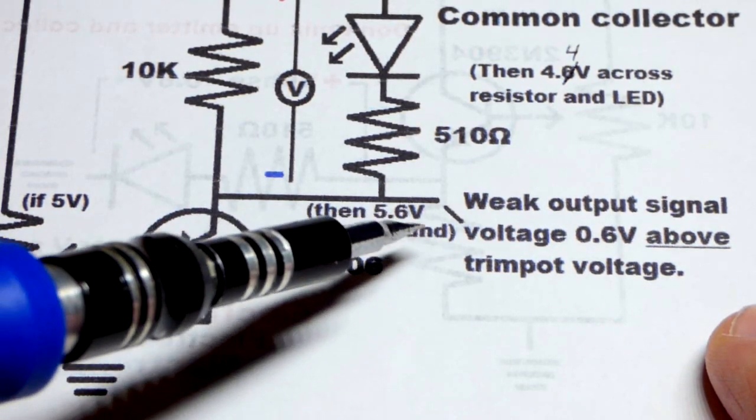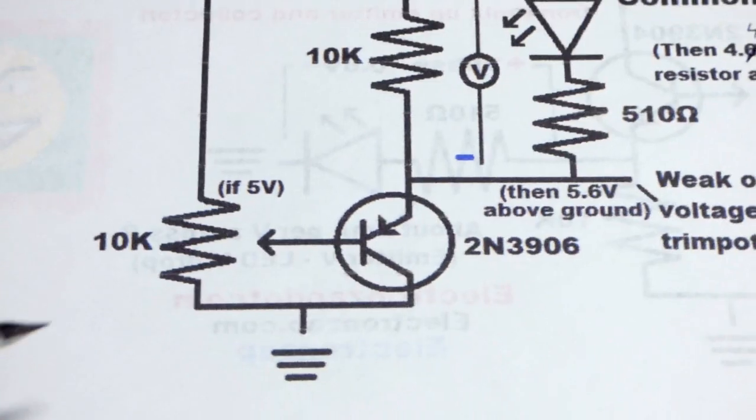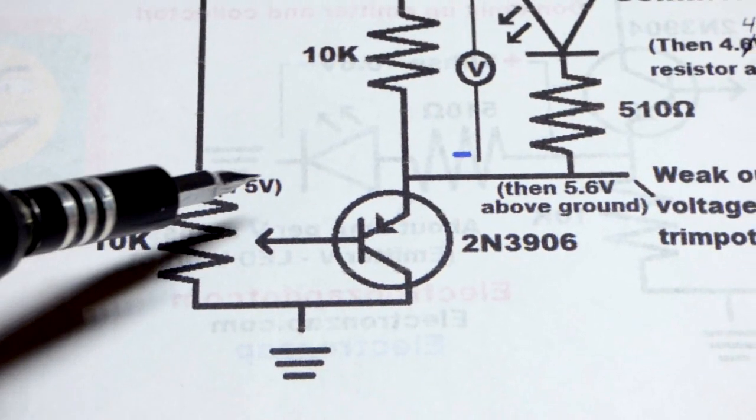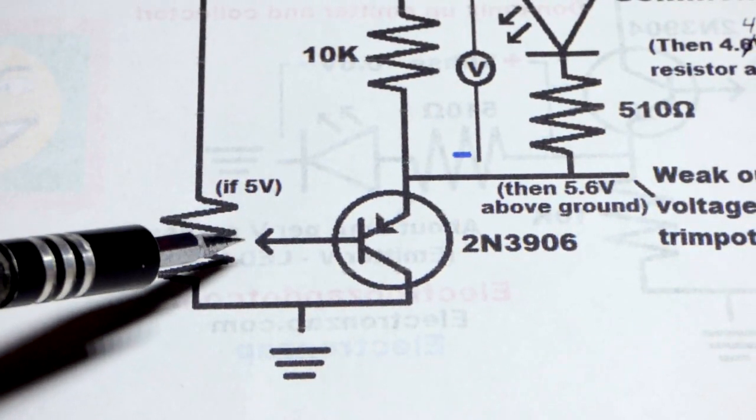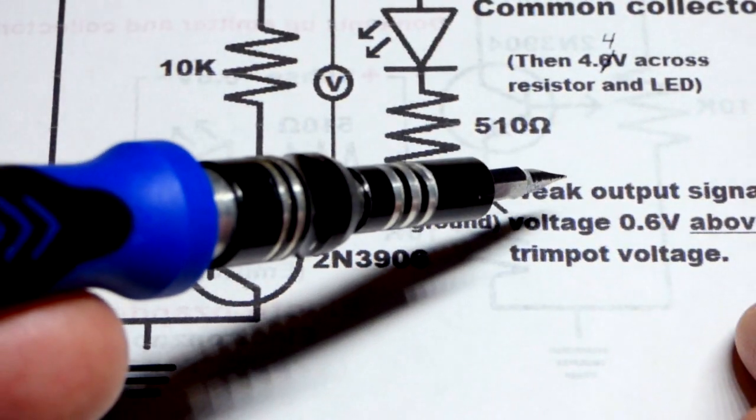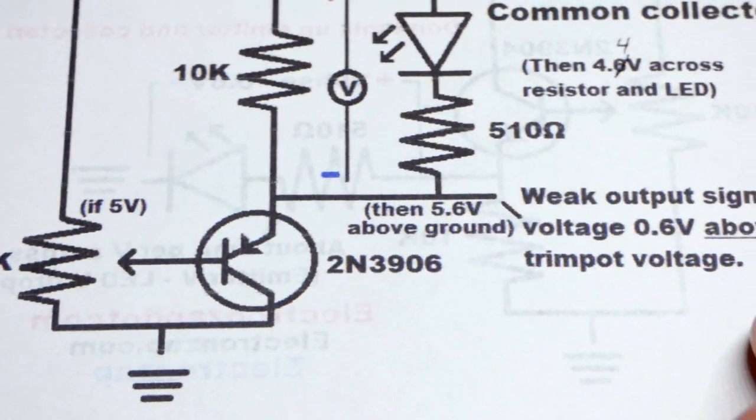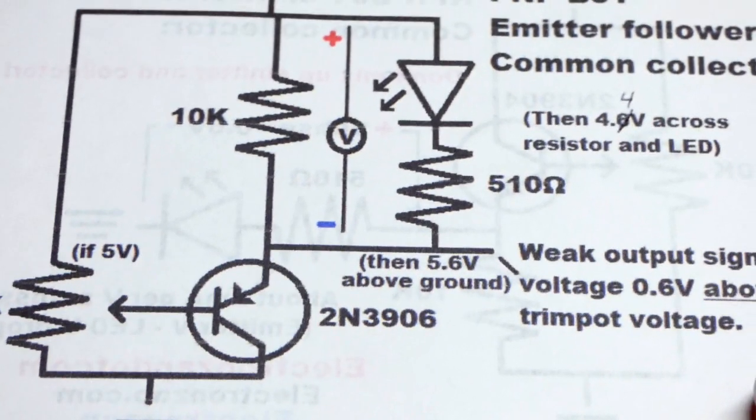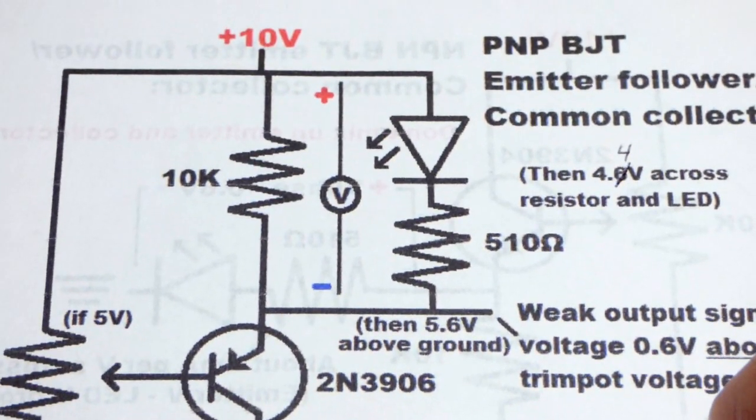That one took 5.6 volts and output 5 volts, which is nice if that's what you want. You could set the trim pot to 5 volts. You'd have 5.6 there. You feed it to the NPN. It outputs 5 instead of 5.6. So that's probably the circuit we'll look at in the next video.